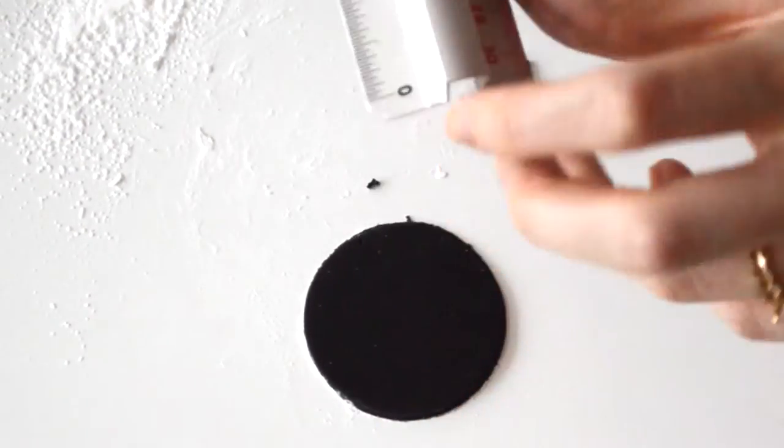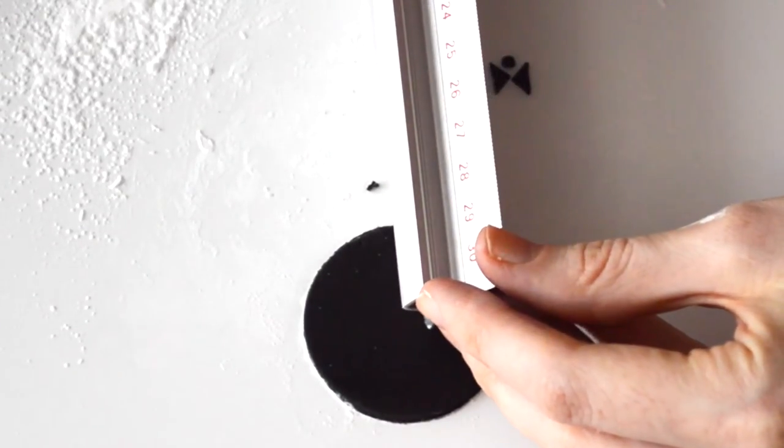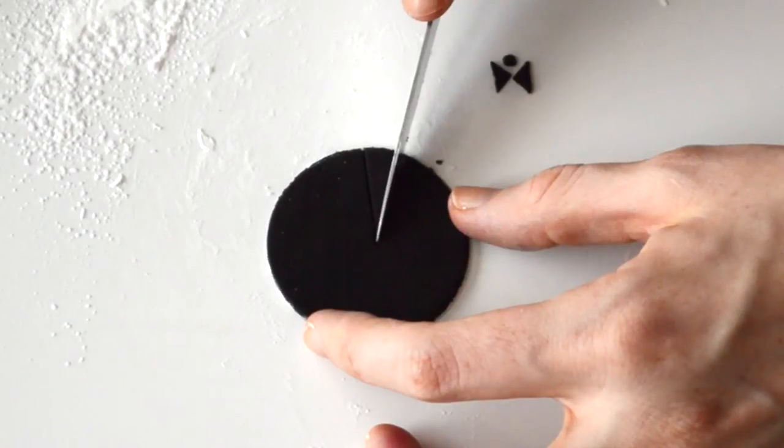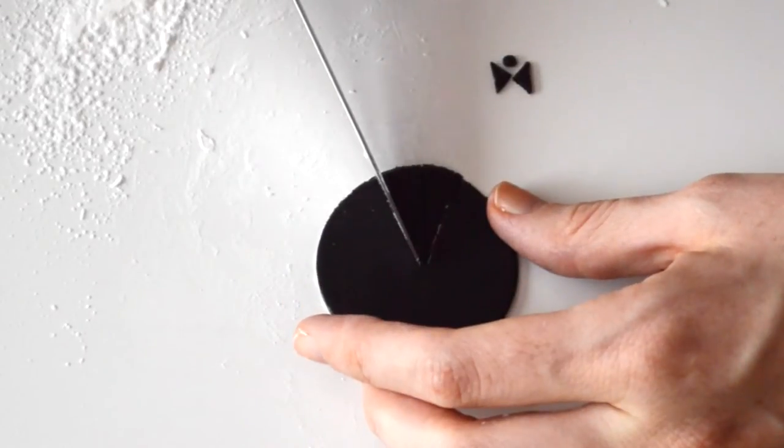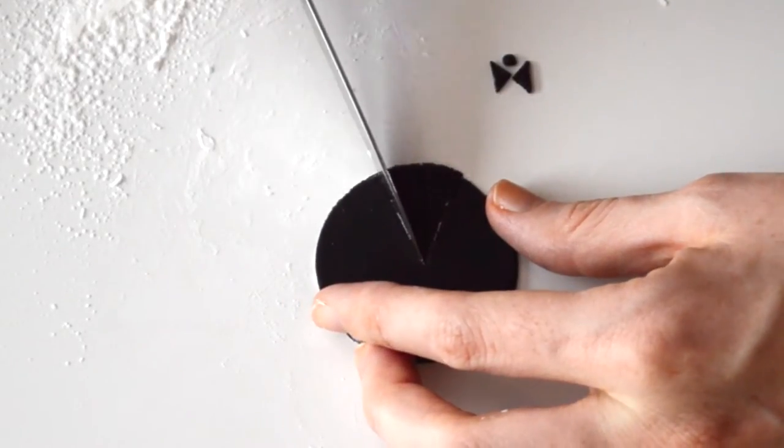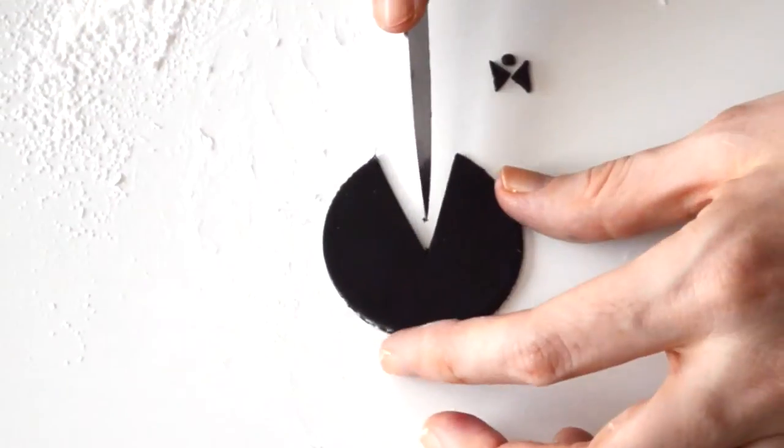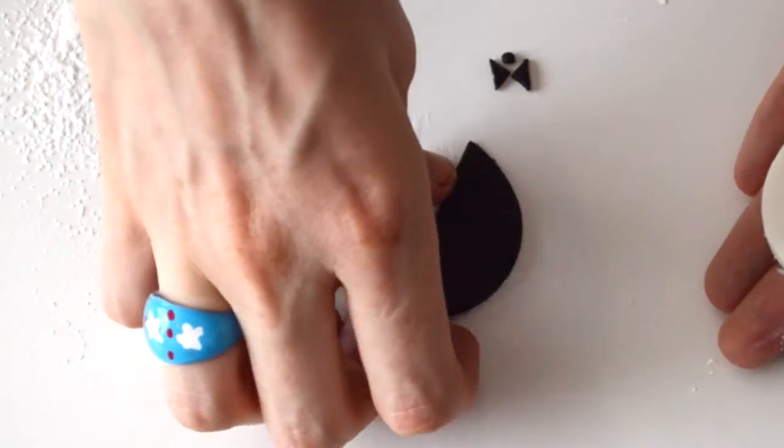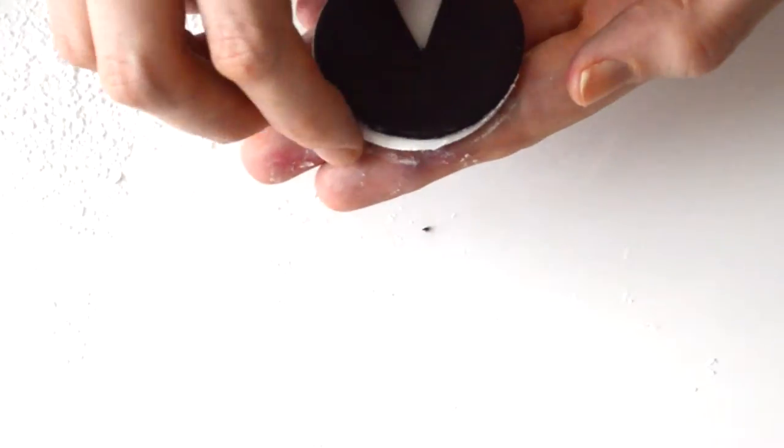Then you're going to take that ruler again, find the one inch mark, and mark that in the center. You want it to be even on both sides. There we have a nice little opening for the bottom of our white part, so you can see when you overlay it, that white section looks really nice.